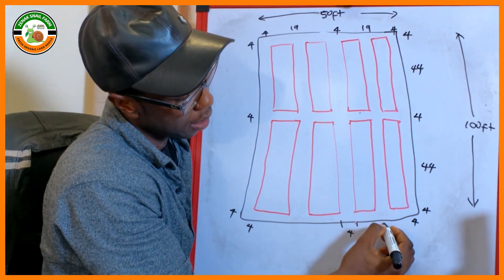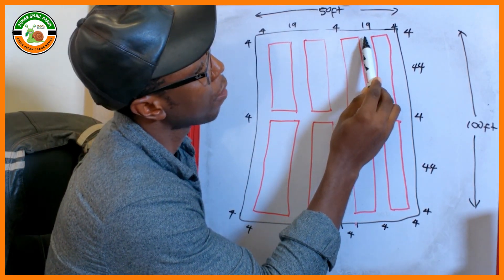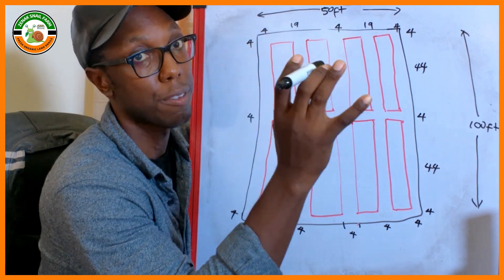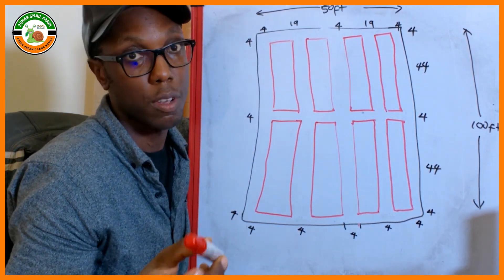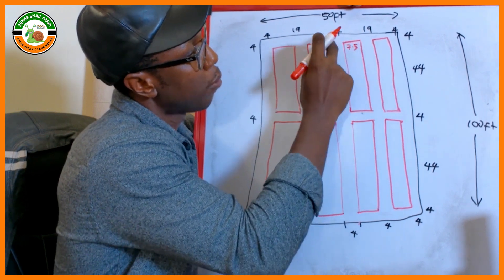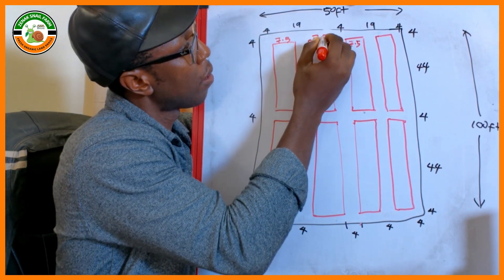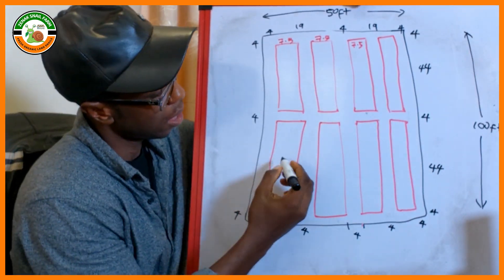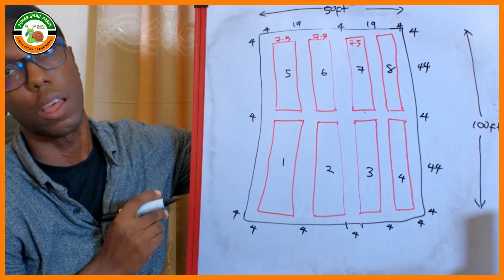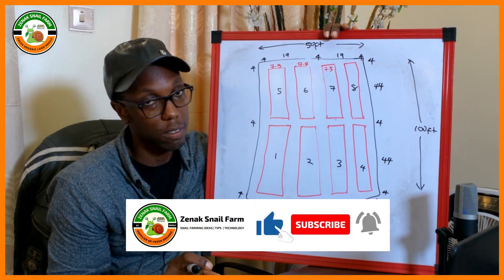The walkway is 4 feet. If we have 4 feet of walkway here and the entire length of this was 19, if we subtract 4 from 19, that means we have 15 feet to share between these two modules. 15 divided by 2 is 7.5 feet. So that means the dimension of this module is 7.5 feet in width by 44 feet in length, and they are all the same. And now we have 1, 2, 3, 4, 5, 6, 7, 8 modules with walkways surrounding them. I hope this has been clear.